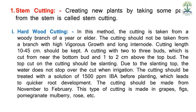Internodal length मतलब दो nodes/कलियों के बीच की जगह — जैसे गन्ने की गांठों के बीच की पोरी। Cutting with two or three buds is cut from near the bottom bud and one to two centimeters above the top bud. Cutting length should be kept 10 to 45 centimeters.